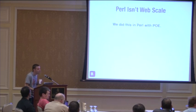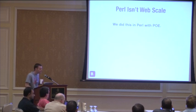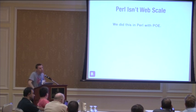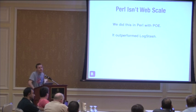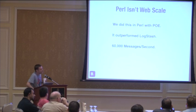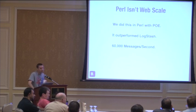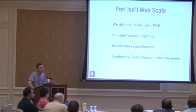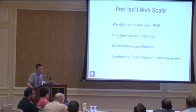I've heard Perl isn't web scale, and I disagree. We as a team built this all in Perl with POE as a backend, and it outperformed Logstash right out of the gate. After a day's worth of work, I was able to outperform Logstash in consuming a logging stream and tokenizing a ton of data. Right now we're doing 60,000 messages per second on each processor node, and that's only constrained by Elasticsearch indexing speed.